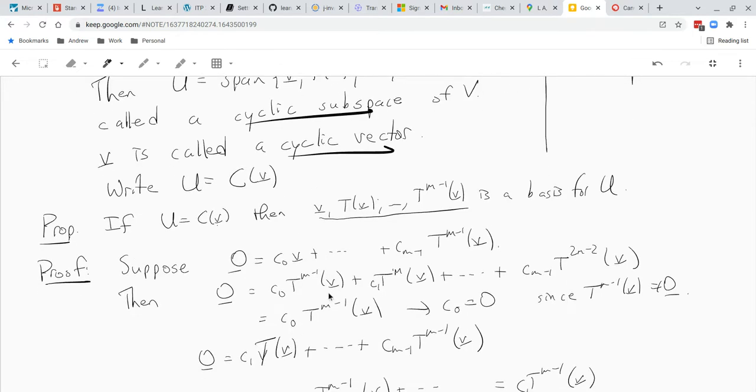Okay, so let's suppose that we have some equation, zero is some linear combination of v combined with t's, right? So like c0 v plus c1 t of v plus c m minus 1 t to the m minus 1 of v. Okay, and that's zero.